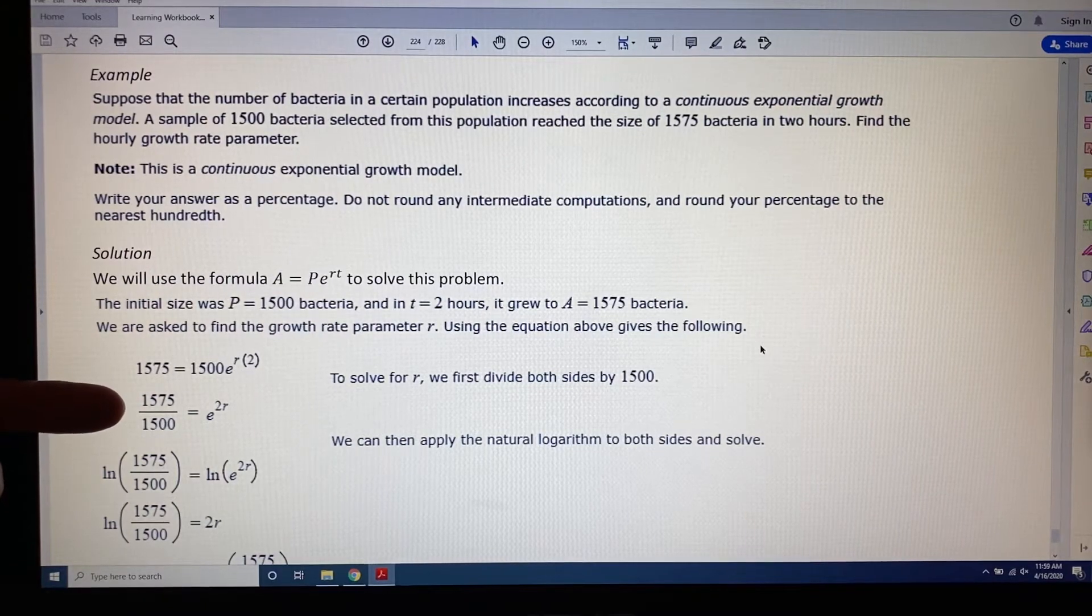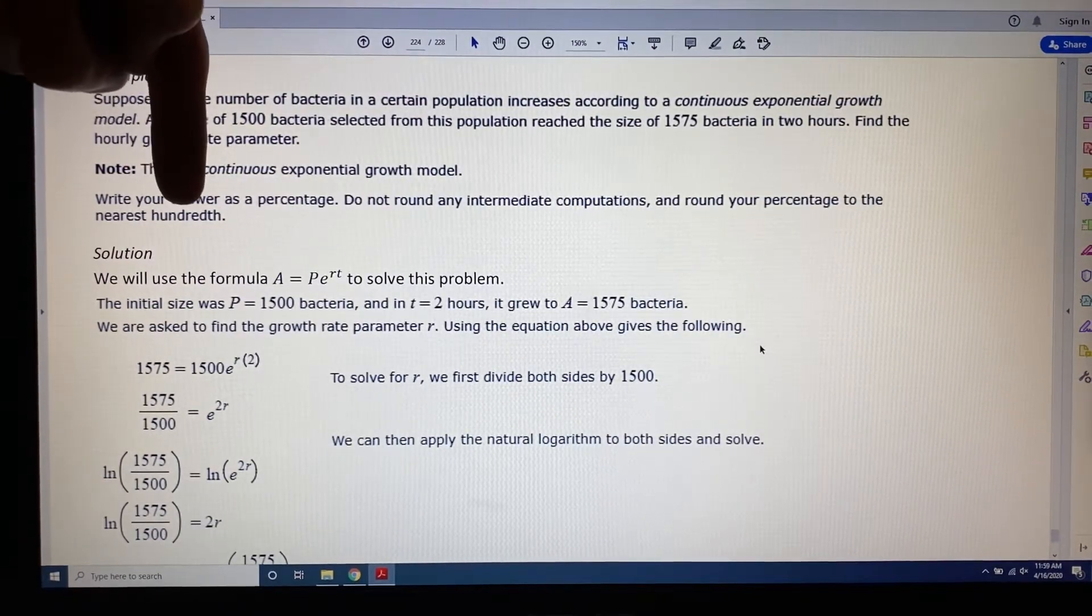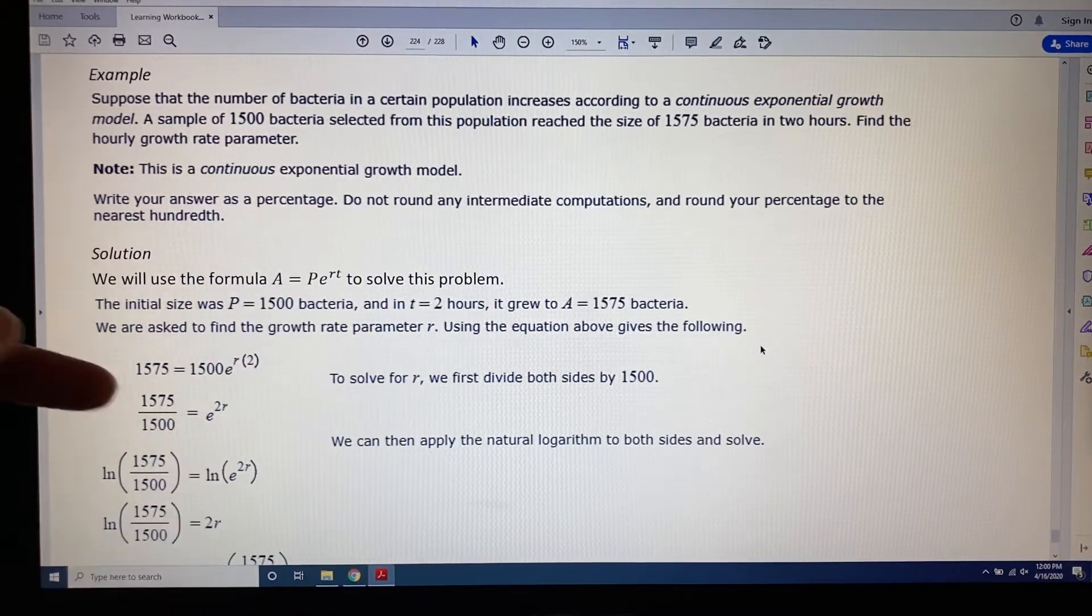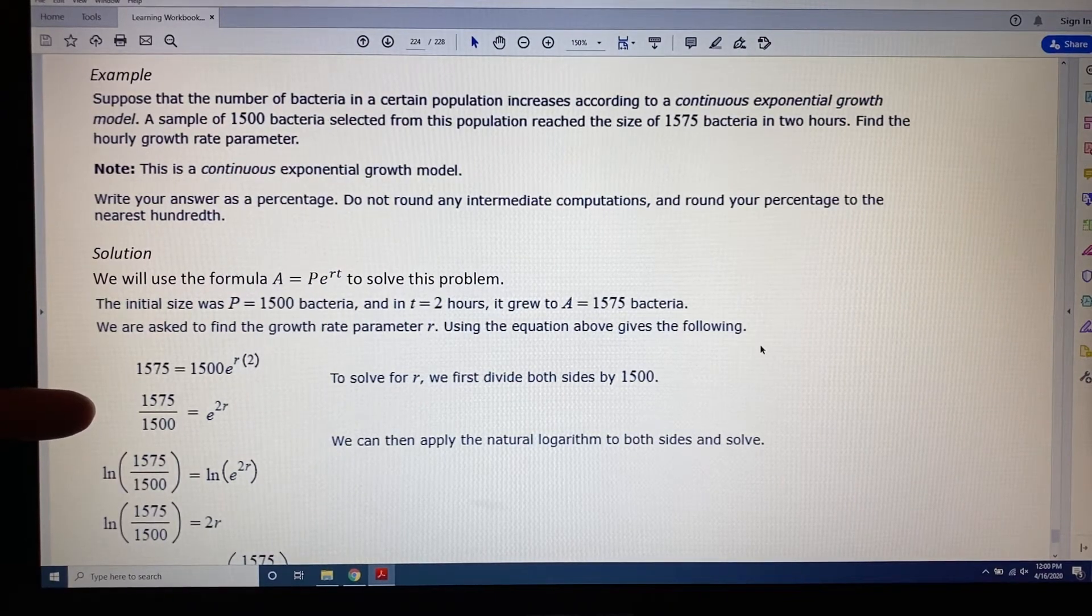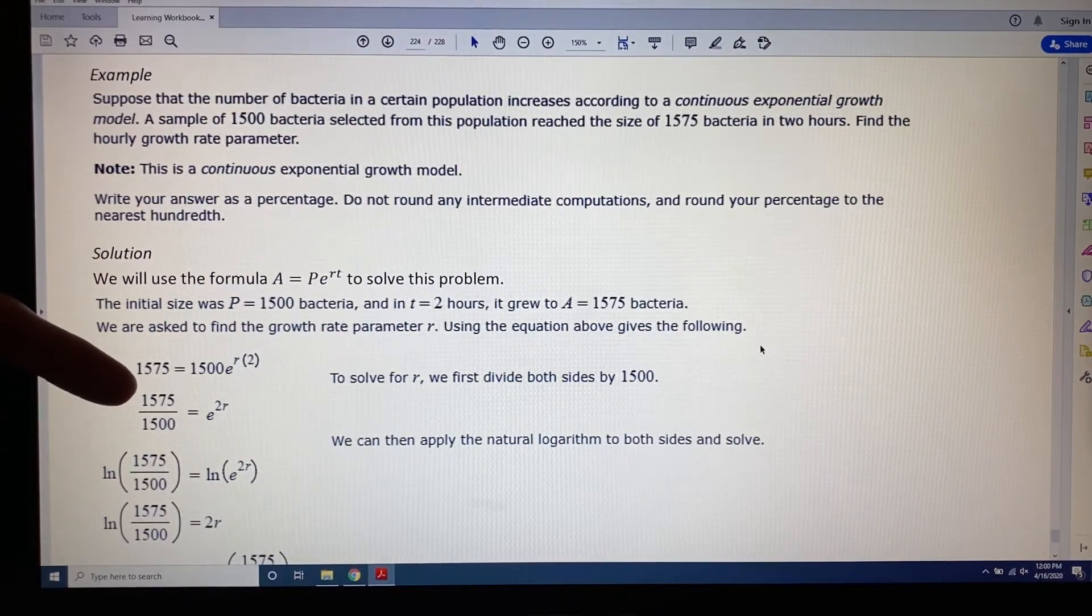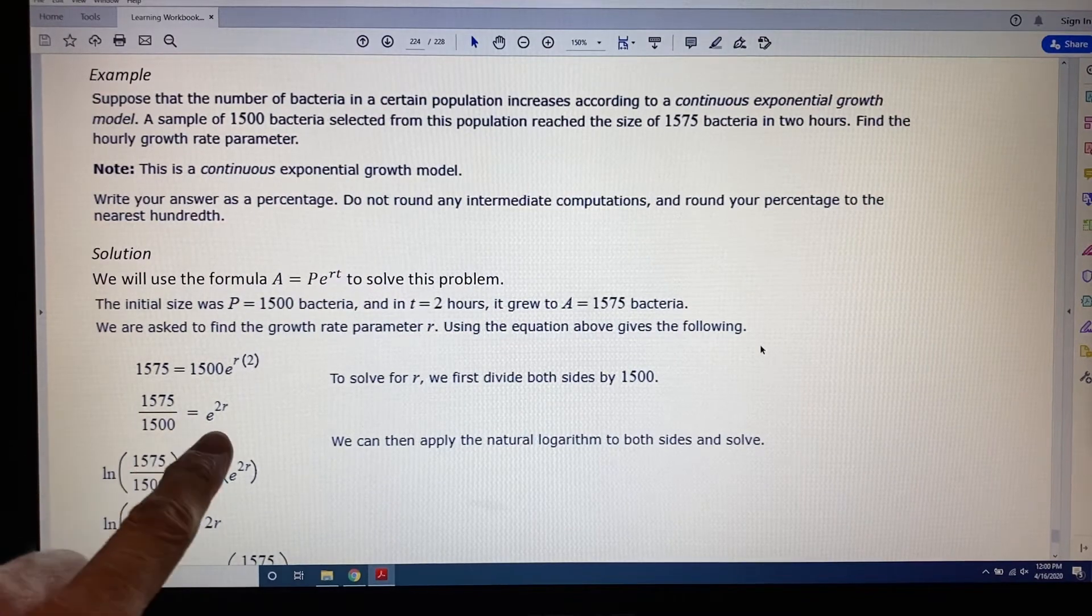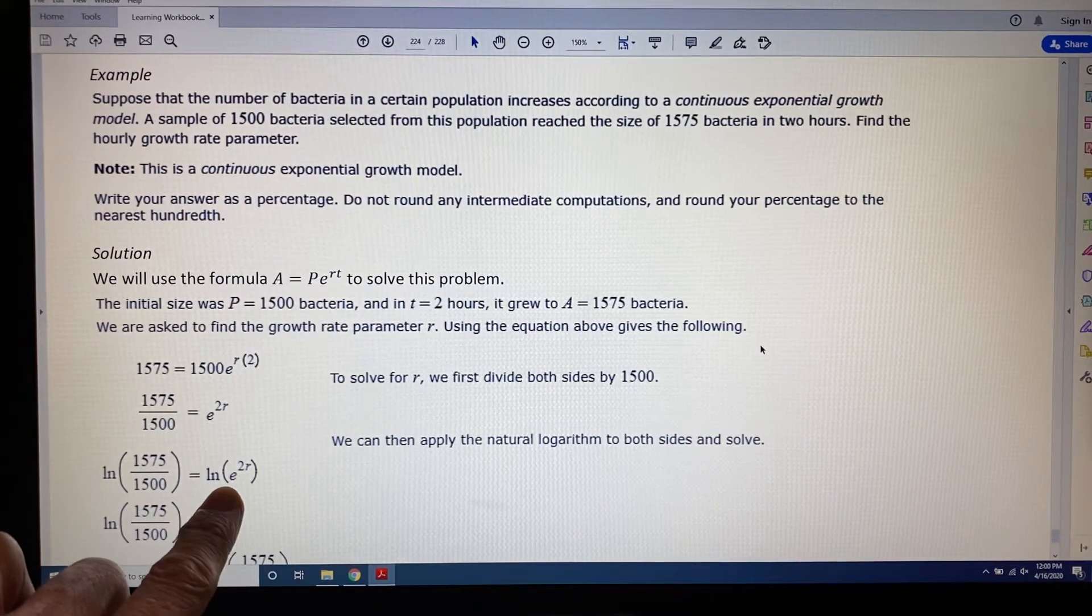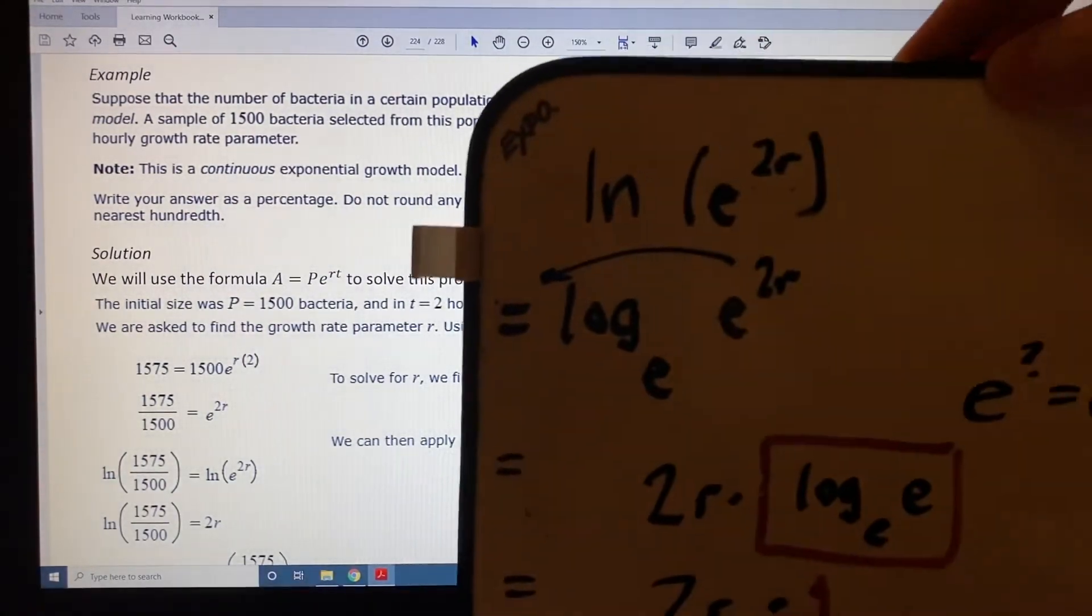Then we have 1575 divided by 1500 equals E to the 2R. Again, this is an exponential equation of type 2, so we need to take a log of both sides. Because we are asked for a decimal, the instructions say nearest hundredth, we're going to take log 10 or log E of both sides. The base in our problem is E, so therefore we will use log base E, which is also known as natural log. So we're taking the natural log of both sides. On the left side, 1575 over 1500 becomes natural log of 1575 over 1500. On the right side, E to the 2R becomes natural log of E to the 2R. Now it just happens that natural log of E to the 2R equals 2R. They didn't show any of those steps and I want you to see them. So here they are.